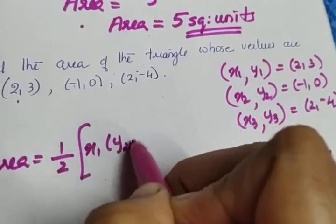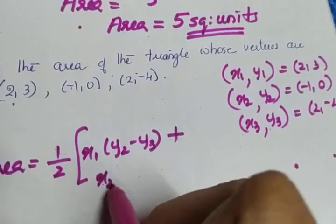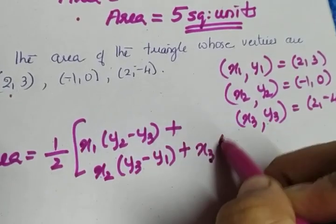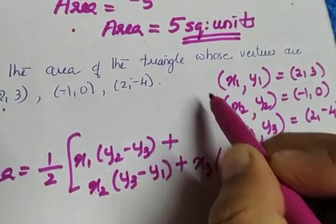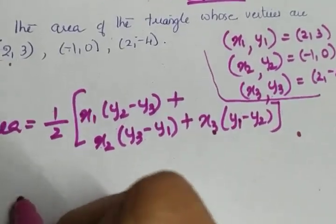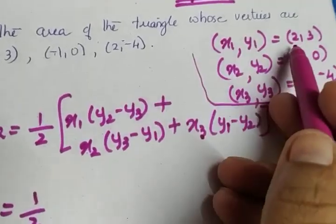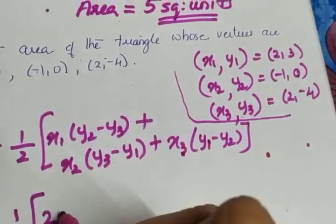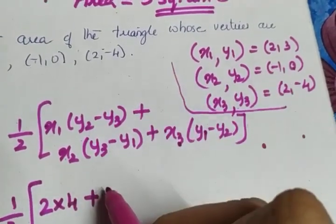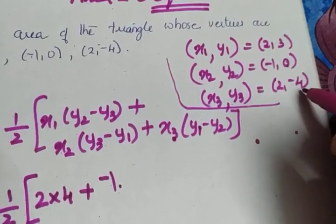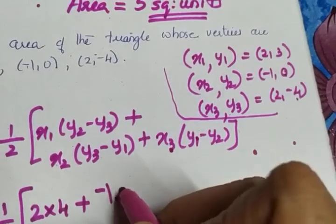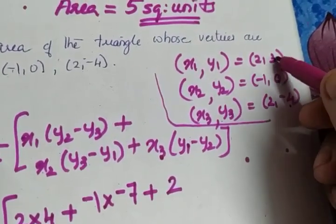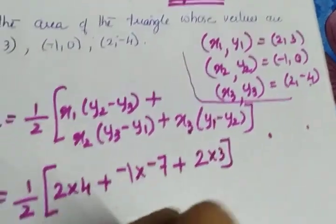Now apply the values: half into x1 is 2, times (y2 minus y3) which is 0 minus (−4) = 4; plus x2 is −1, times (y3 minus y1) which is −4 minus 3 = −7; plus x3 is 2, times (y1 minus y2) which is 3 minus 0 = 3.